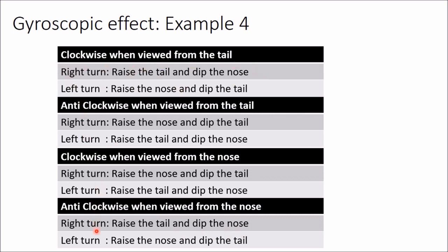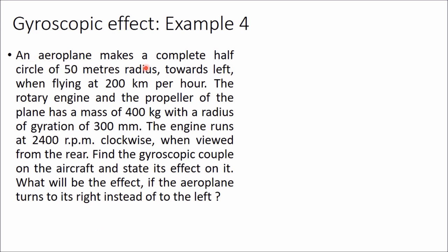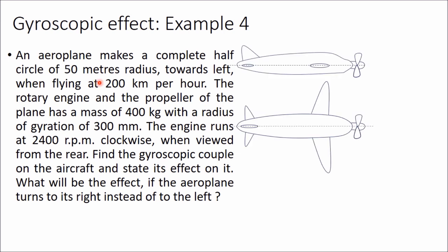Let's solve an example problem. An aeroplane makes a complete half circle of 50 metres radius towards the left. I have drawn the front view and top view of the aeroplane. The rotary engine and propeller of the plane have a mass of 400 kg with a radius of gyration of 300 mm. The engine runs at 2400 RPM clockwise when viewed from the rear. Find the gyroscopic couple on the aircraft and state its effect. Also find the effect if the aeroplane turns to the right instead.